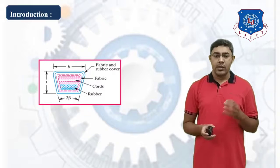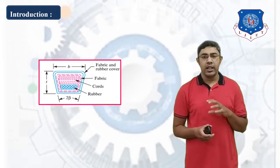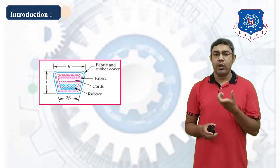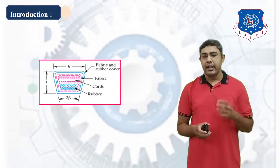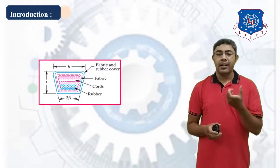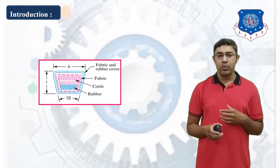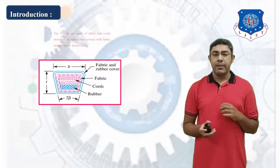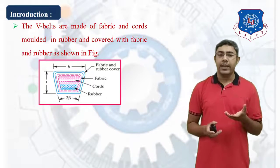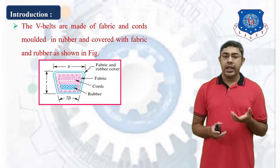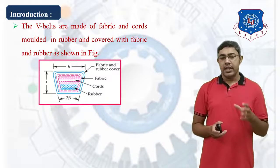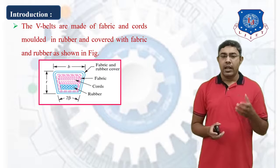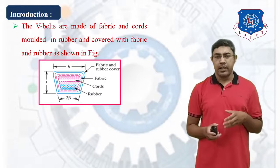Consider the figure as shown here. This is the cross-section of V-Belt. You can see the upper top width, denoted by small b, and the depth of this belt is small t. The angle of groove is denoted as 2-beta. V-Belt are made of fabric and cords mounted in rubber, covered with fabric and rubber as shown.